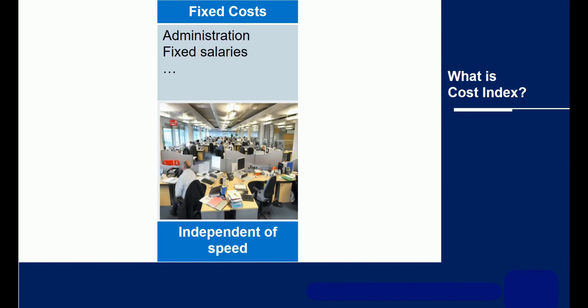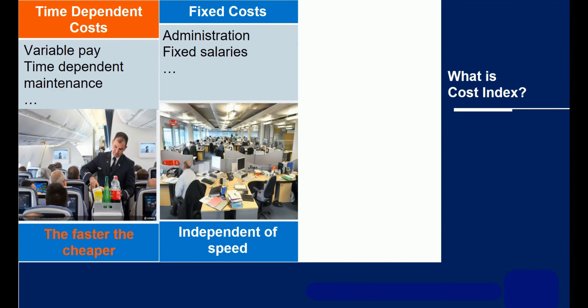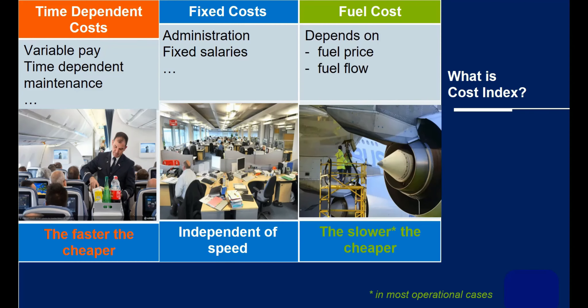Now let's look at these costs. Some are fixed costs or overheads — pilots have no control over these. Some of the costs are linked to the duration of the flight; for example, airlines might pay for some components per flight hour. Another example would be flight crew pay. And the other cost is the cost of fuel burnt.